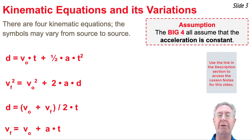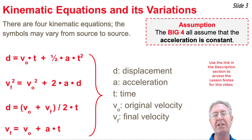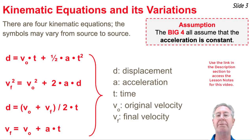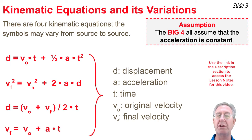What's important is that you simply need to know what these symbols represent — there are five of them. The d's represent displacement or change in position. The a's represent acceleration, and t represents time. The v's stand for velocity: a v with a subscript o is the original velocity, and a v with a subscript f is the final velocity.